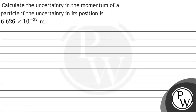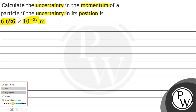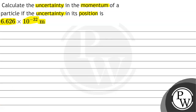Let's read this question: calculate the uncertainty in momentum of a particle if the uncertainty in its position is 6.626 into 10 to the power minus 32 meters. Let's solve.